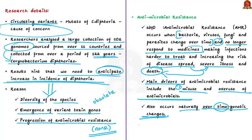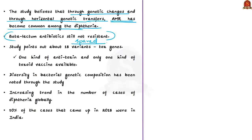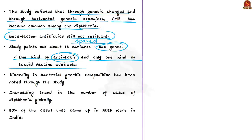The study believes genetic changes and horizontal genetic transfers have made antimicrobial resistance common among diphtheria. However, beta-lactam antibiotics like penicillin are currently spared — there is still no antimicrobial resistance against them. The study also points out about 18 variants of tox genes — genes capable of producing 18 different varieties of toxins — while we have currently developed only one kind of antitoxin and one kind of toxoid vaccine.